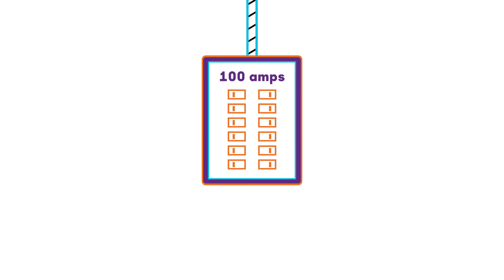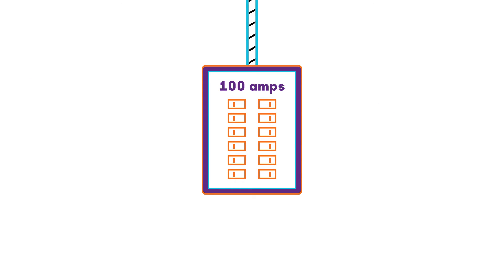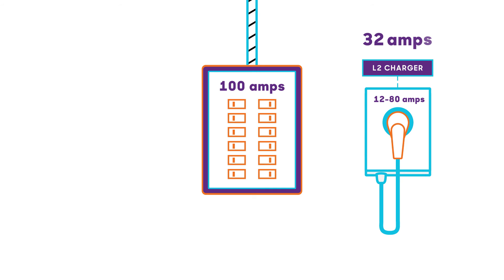One more thing to be aware of is that your home receives a certain amount of current from the electric utility, typically 60, 100, or 200 amps. And Level 2 charging systems draw between 12 and 80 amps, though today 32, 40, or 48 amps is the most likely.